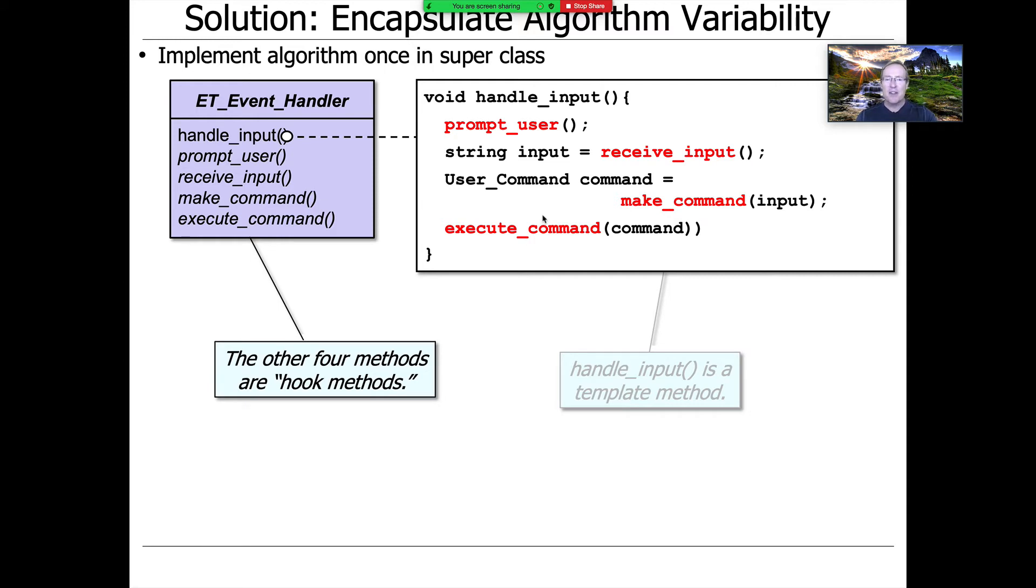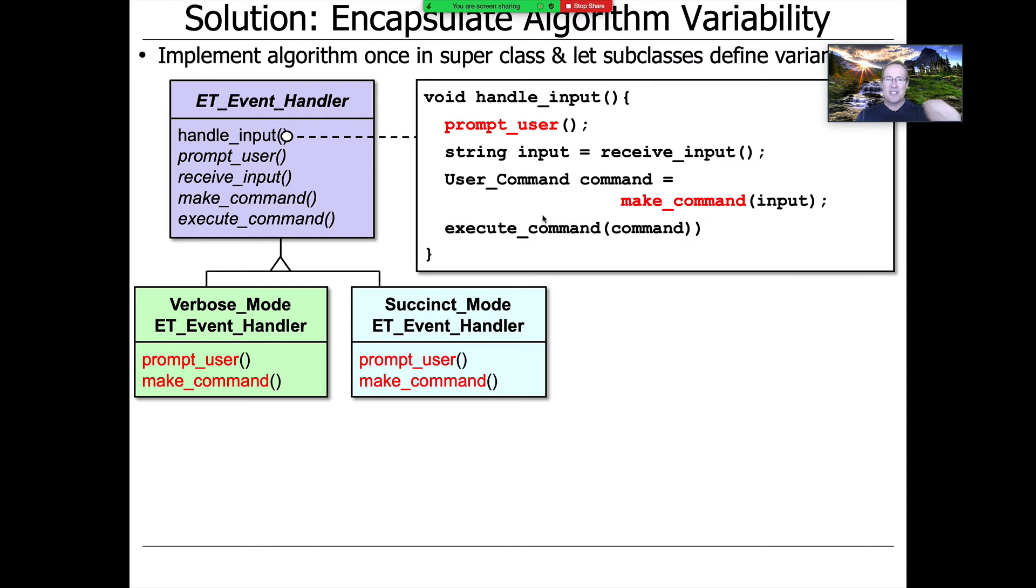You can come along and subclass from the base class and then override the various hook methods, thereby allowing controlled variability in the behavior or the steps that the template method performs. Depending on what mode we're in, whether verbose mode or succinct mode, prompt user and make command will vary in their implementation, but the overall structure of the template method will remain unchanged. We're not repeating ourselves. We're keeping the code common, but we're able to systematically vary the implementation.